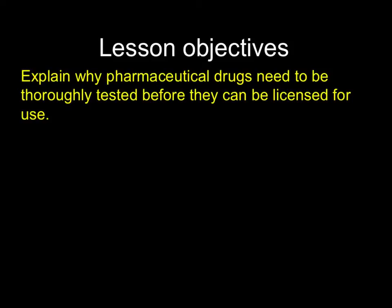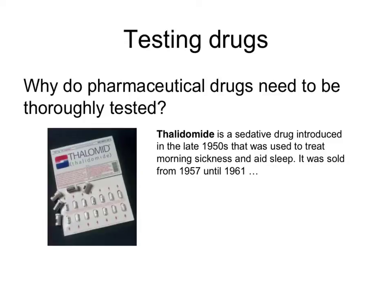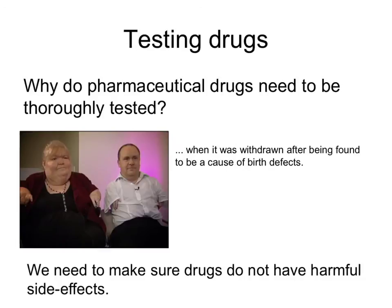You also have to explain why pharmaceutical drugs need to be thoroughly tested before they can be licensed for use by the government. If they're not thoroughly tested, there could be terrible tragedies. One example was thalidomide — a sedative introduced in the late 1950s to treat morning sickness and help pregnant women sleep. It was sold for four years until they realised it caused birth defects and had to be withdrawn. We must ensure drugs are safe and don't have harmful side effects.